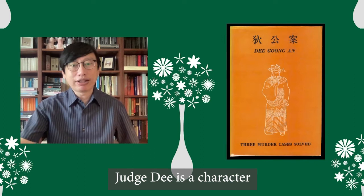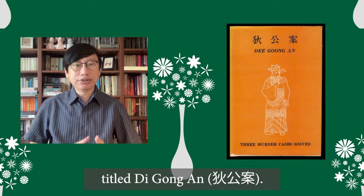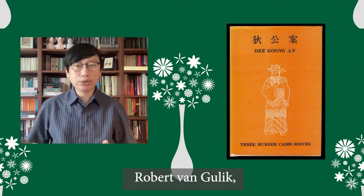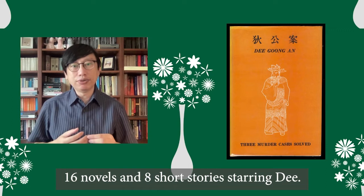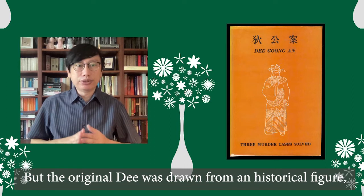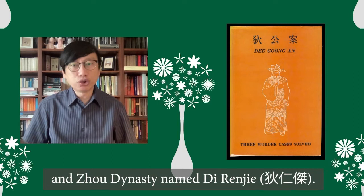Judge Dee is a character from an anonymously written 18th century Chinese novel titled Dee Gong An. The English translator of this book, Robert Van Gulik, was so inspired by it that he went on to write 16 novels and 8 short stories starring Dee. But the original Dee was drawn from a historical figure, a real official of the Tang and Zhou dynasty named Dee Ren Jie.